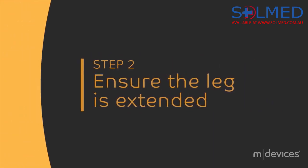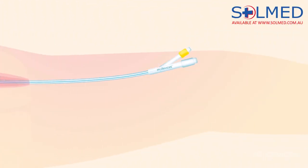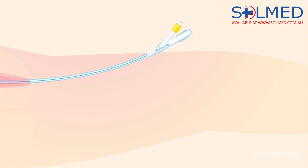Step 2: Ensure leg is extended and that the catheter has, at a minimum, 1 inch of tubing slack between the urinary meters and the securement site before applying.